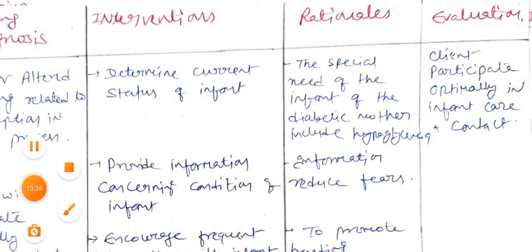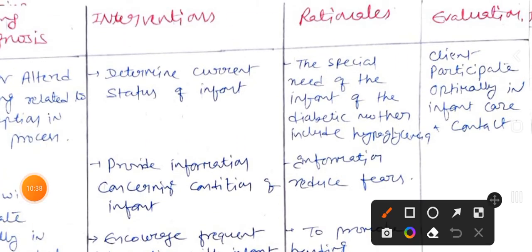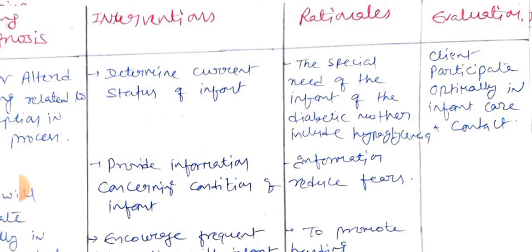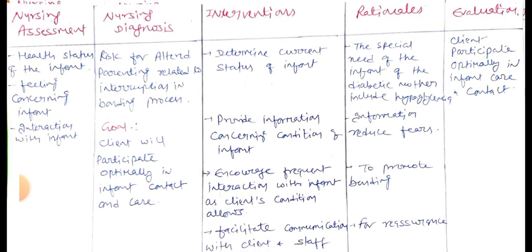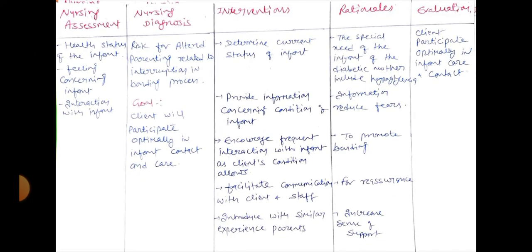After these interventions, we reach the evaluation for nursing diagnosis four: the client participates optimally in infant care and contact. This nursing care plan is now complete.